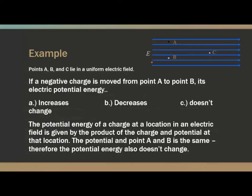Third example, same graphic: if a negative charge is moved from point A to point B, its electric potential energy will do what? We already established that the electric potential at A equals the electric potential at B. So if you move the same negative charge from A to B, it encounters no change in potential energy — its potential energy remains the same, because it's moving along what's called an equipotential line, a line of equal potential.